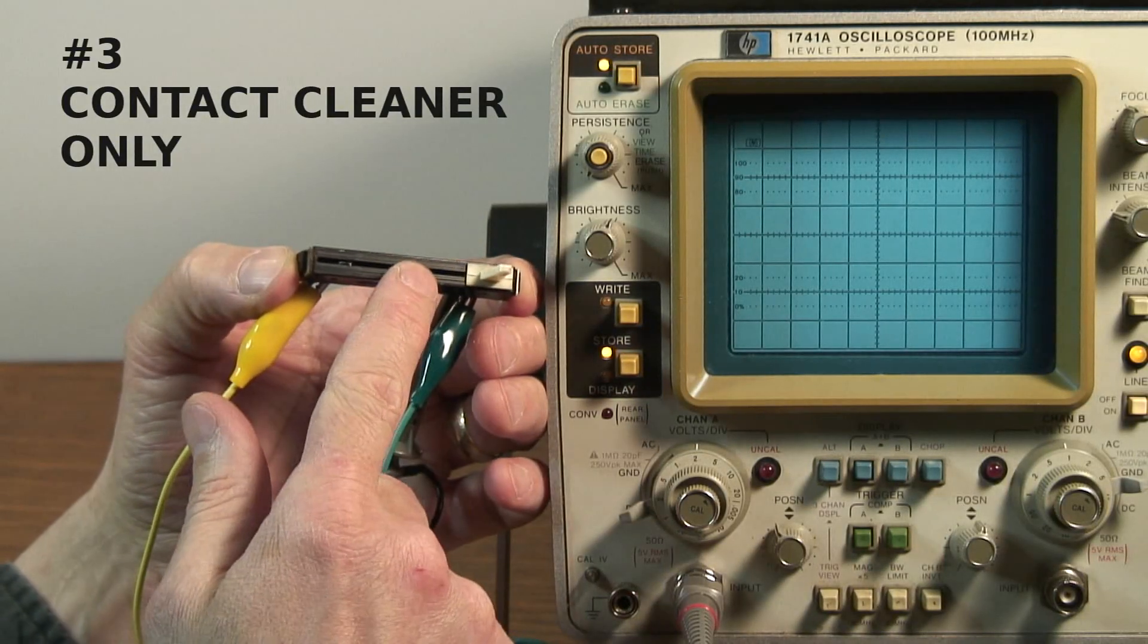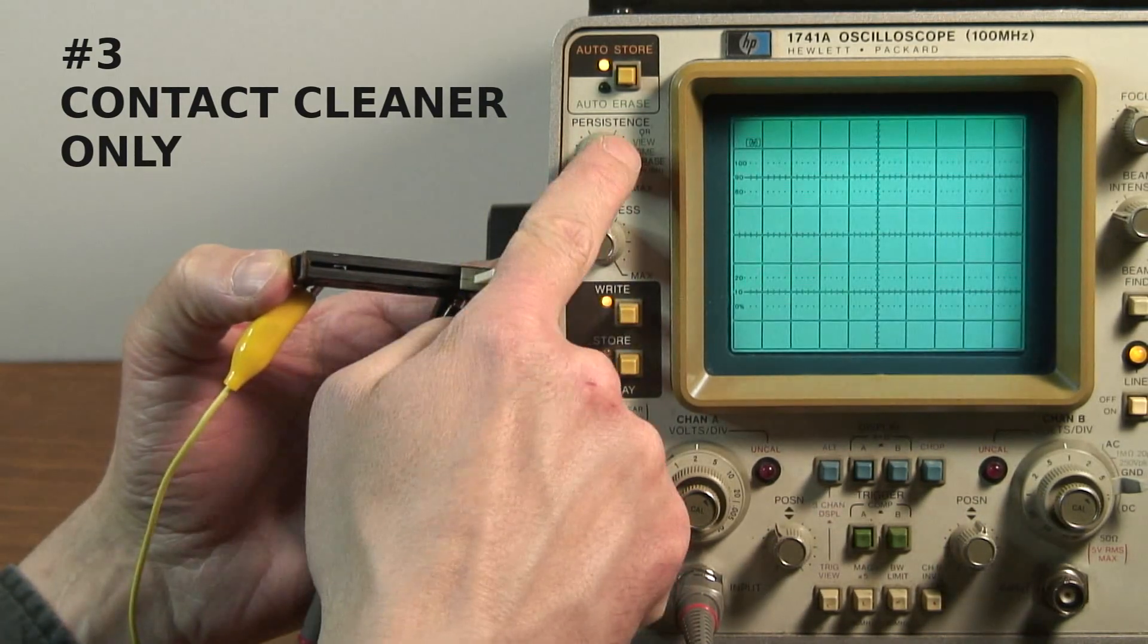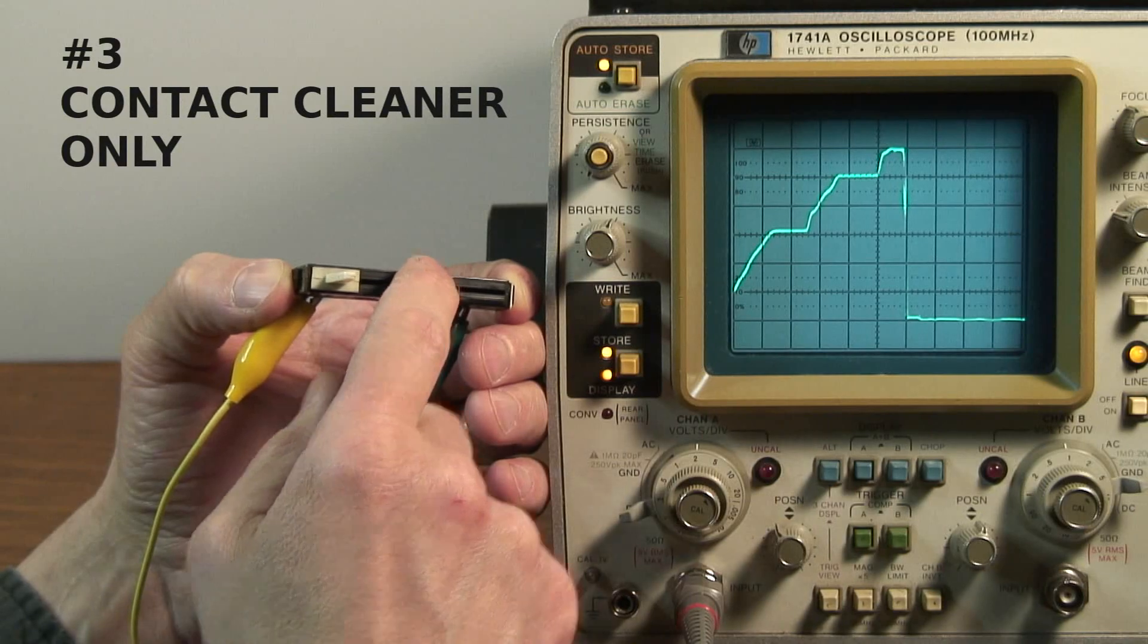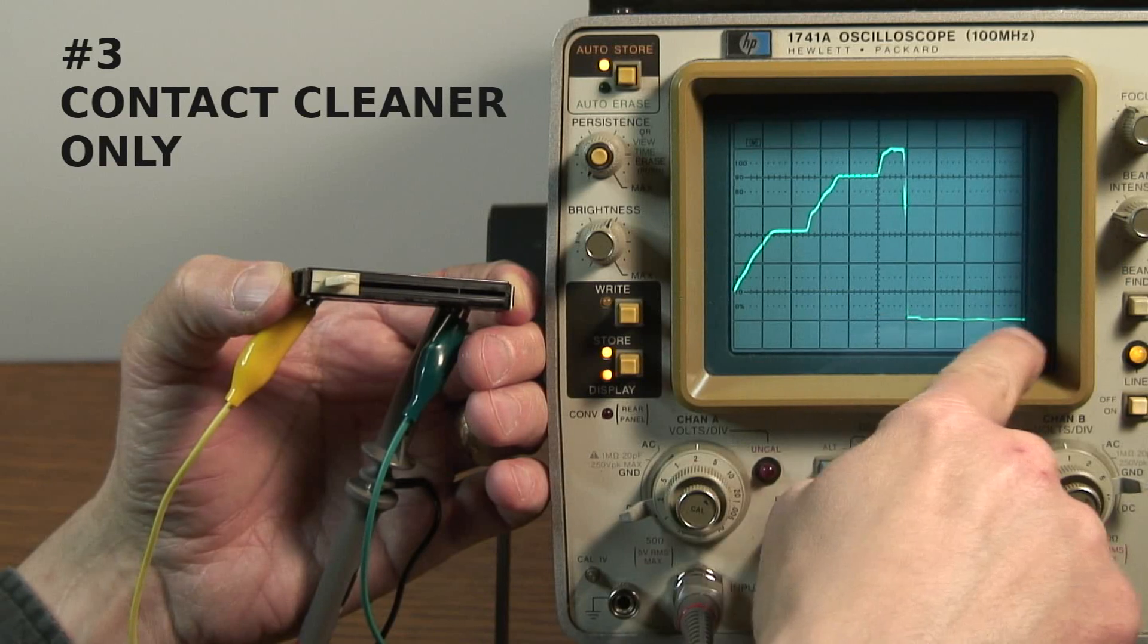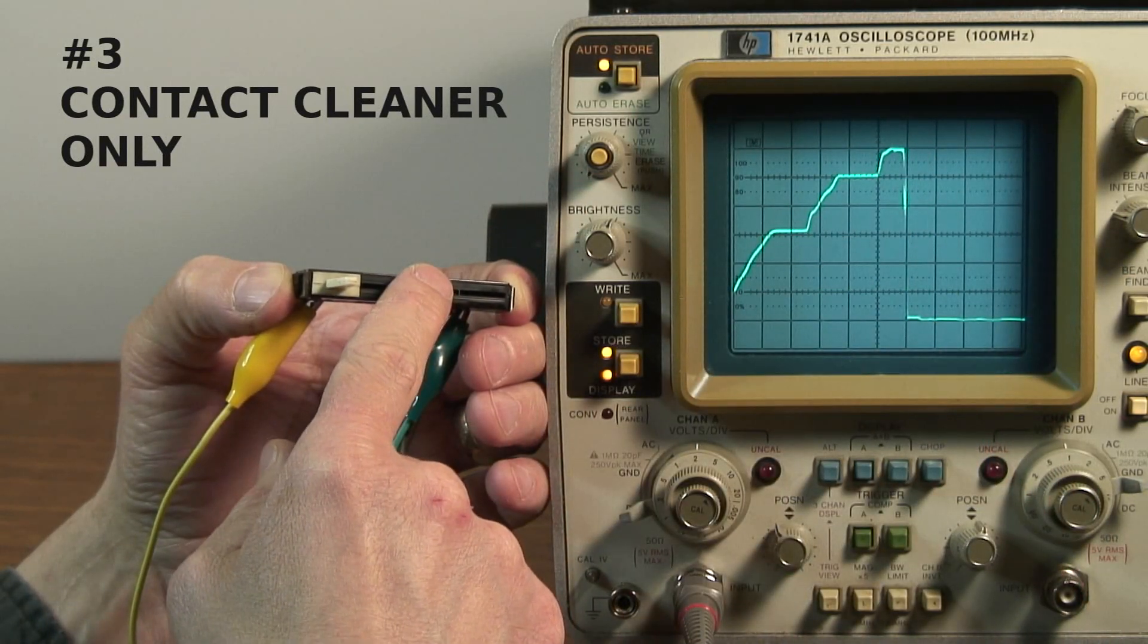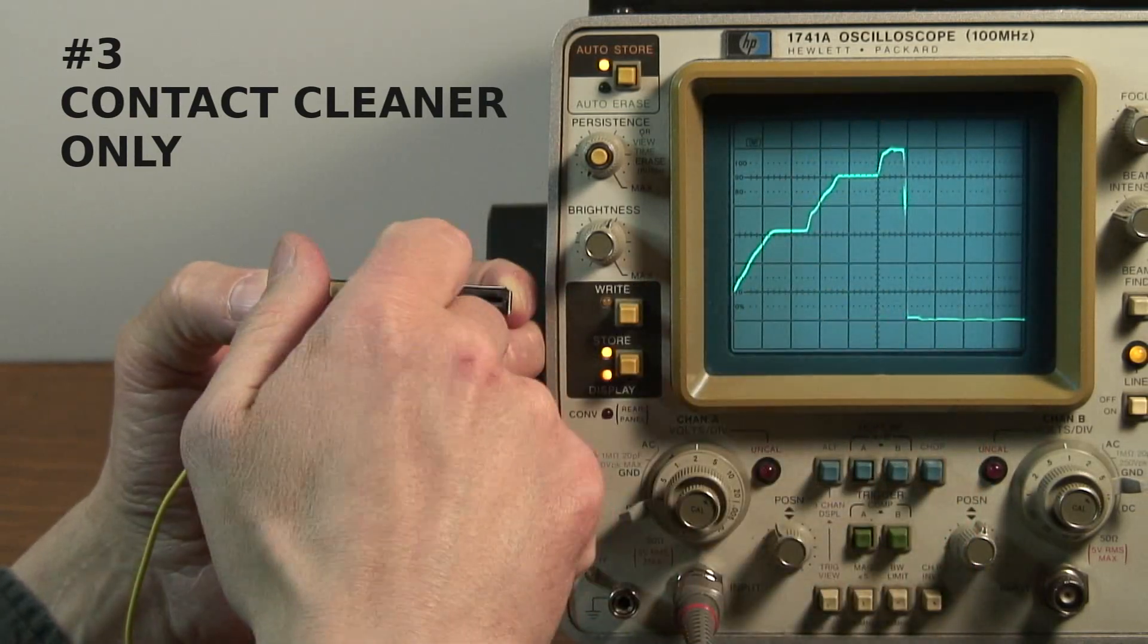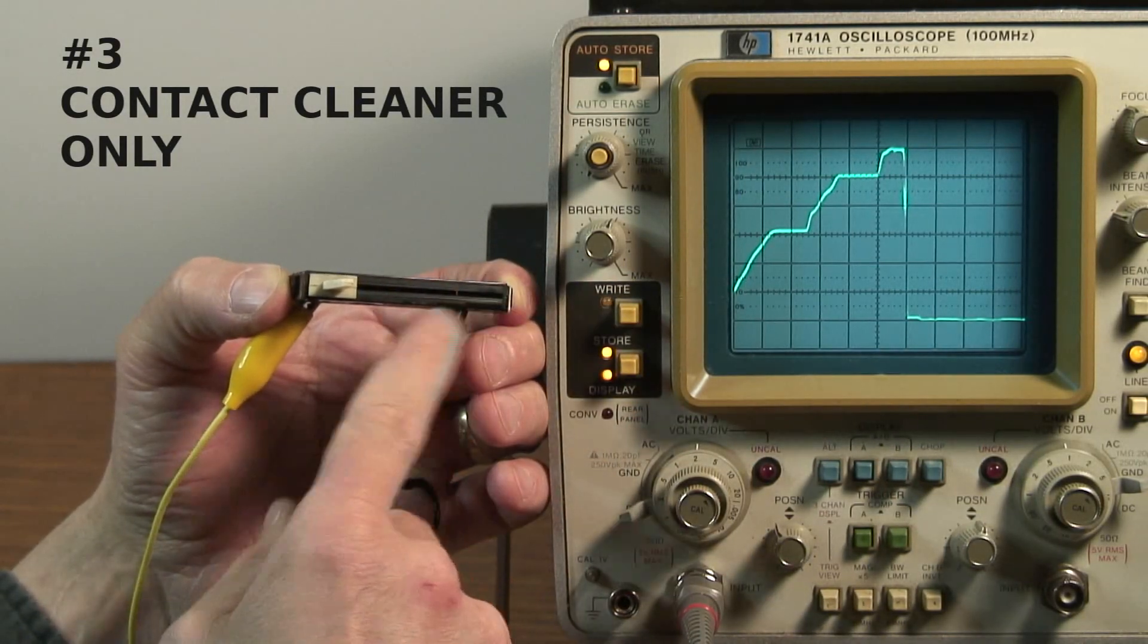This is fader number three. It's the one that was cleaned with contact cleaner, but wasn't blown out with air. Let's see what we get. Yikes. So I could feel some mechanical resistance. So there's still a lot of dirt and grime in here, and you can see where it flattens out. And also at the end, we totally lose contact. So what I'm assuming happened was that the contact cleaner did clean some of the track, but it basically just pushed all the dirt at the end of the travel, and that's why we lose contact right here at the end. So better still, but still not good enough.